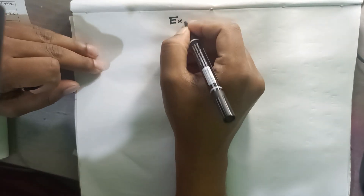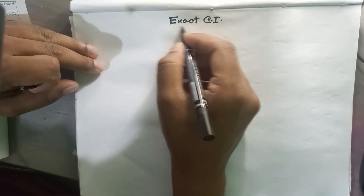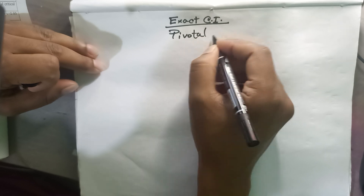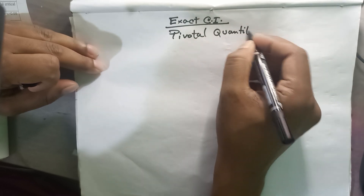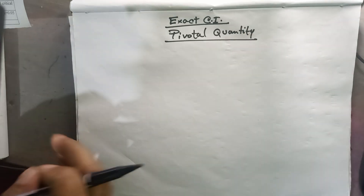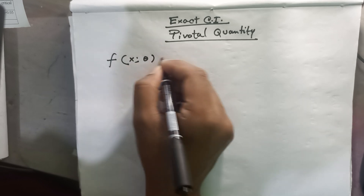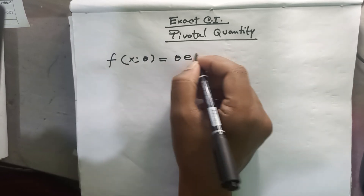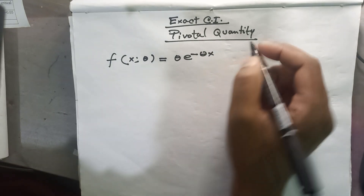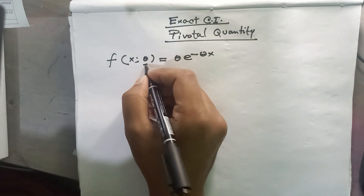Hello everyone. Today we will find the exact confidence interval and we will use the pivotal quantity method. For example, we are given a density function, and we will use the pivotal method for finding the confidence interval for the parameter theta.